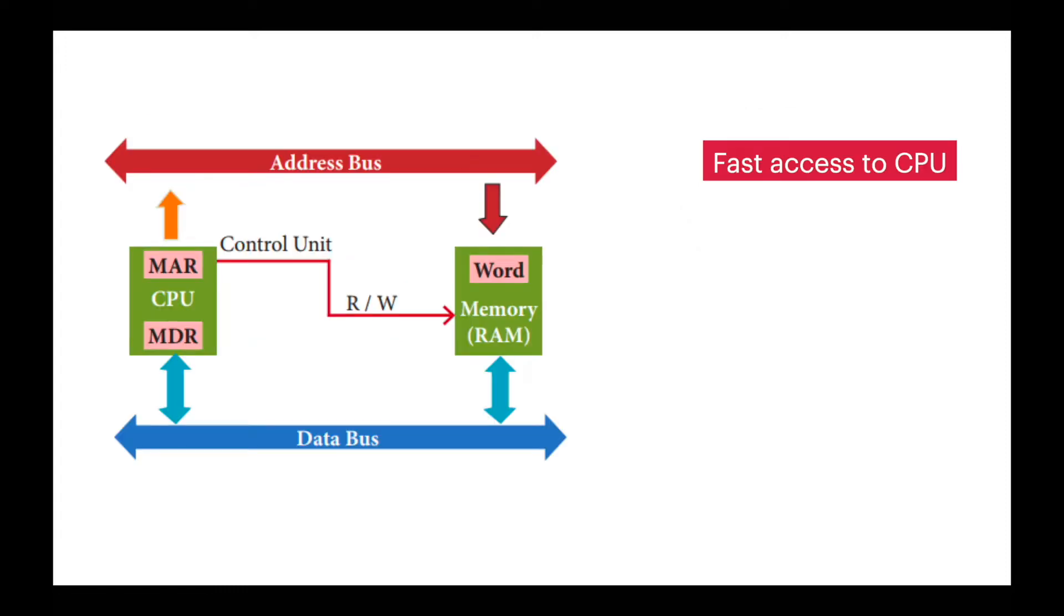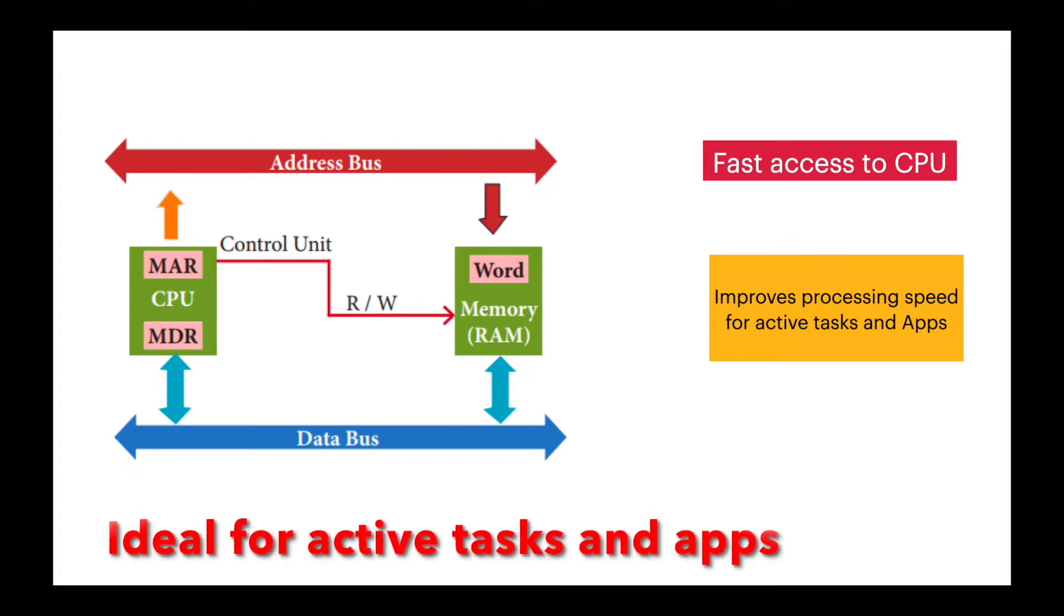Actually, RAM offers very fast access to CPU, which makes it ideal for processing active tasks and apps.